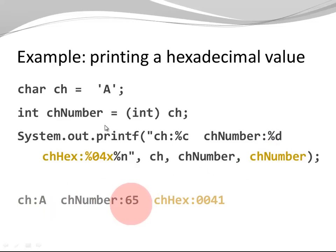And in my output, I can see A, decimal 65, hexadecimal 0041.